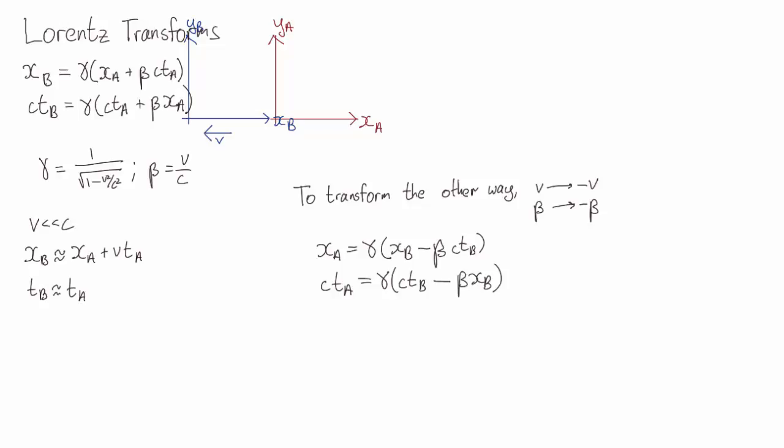So if you're ever trying to transform between two frames, and you can't remember if it's a plus or a minus, which way around the transformation goes, one way to think about it is to imagine the low velocity limit. When you have the Galilean transformations, try and think which way around the sign should be.